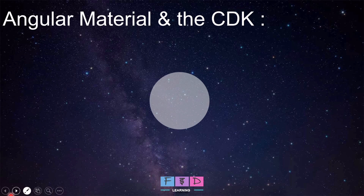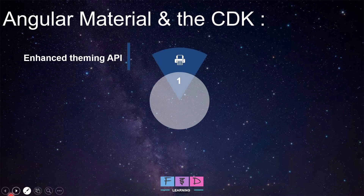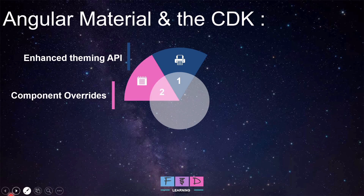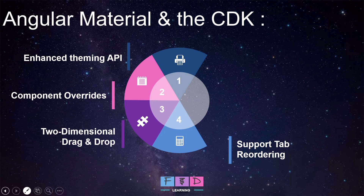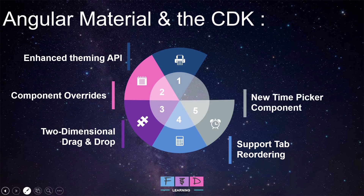Now let's talk on Angular Material updates. Angular Material continues to shape the Angular developer landscape. The Angular team has introduced an enhanced theming API that simplifies customizing and managing application themes. Next, component overrides allow developers to customize and extend Angular Material components. There's also two-dimensional drag and drop for enhanced UI interaction, support for tab reordering to improve user experience, and a brand new time picker component that supports both 12-hour and 24-hour formats.